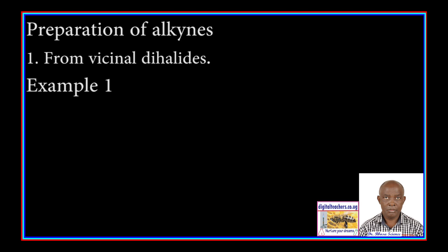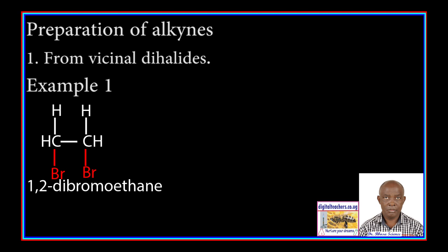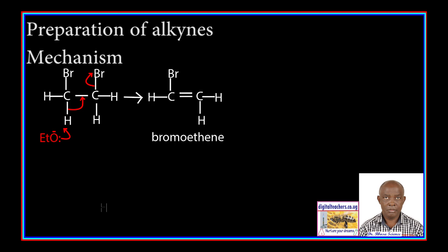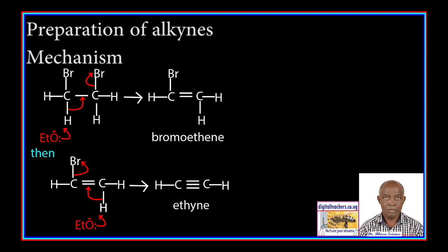Example 1: 1,2-dibromoethane reacts with hot potassium ethoxide in ethanol to form ethyne. In the mechanism, an ethoxide ion removes a hydrogen atom from one carbon atom. The bond between bromine and the adjacent carbon atom breaks to form bromide ion. Then another ethoxide ion removes a hydrogen atom, the triple bond forms, and the bond between the adjacent carbon atom and bromine breaks to form bromide ion.